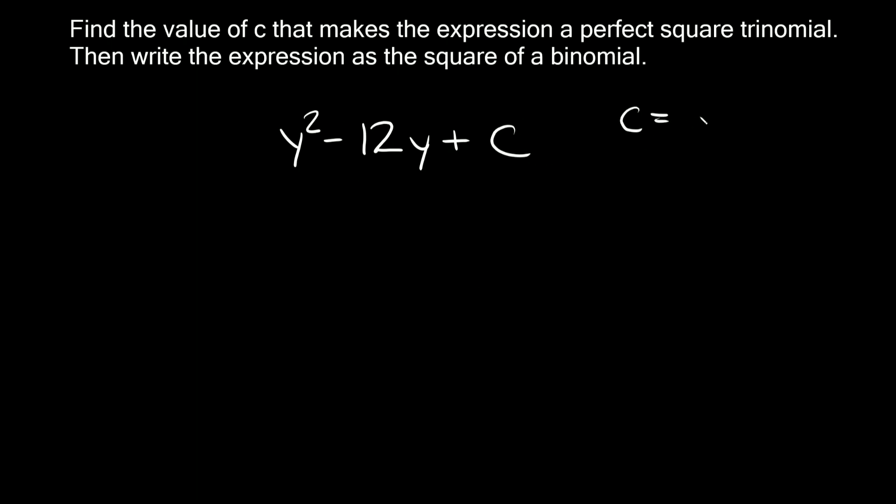So again c is going to be equal to b over 2 in parentheses squared. And in this case what is b? Well b would be negative 12. Again make sure you include the sign that's in front. So here c is going to be equal to negative 12 over 2 in parentheses squared. Negative 12 divided by 2 is equal to negative 6, so we get c is equal to negative 6 squared and that's equal to positive 36.